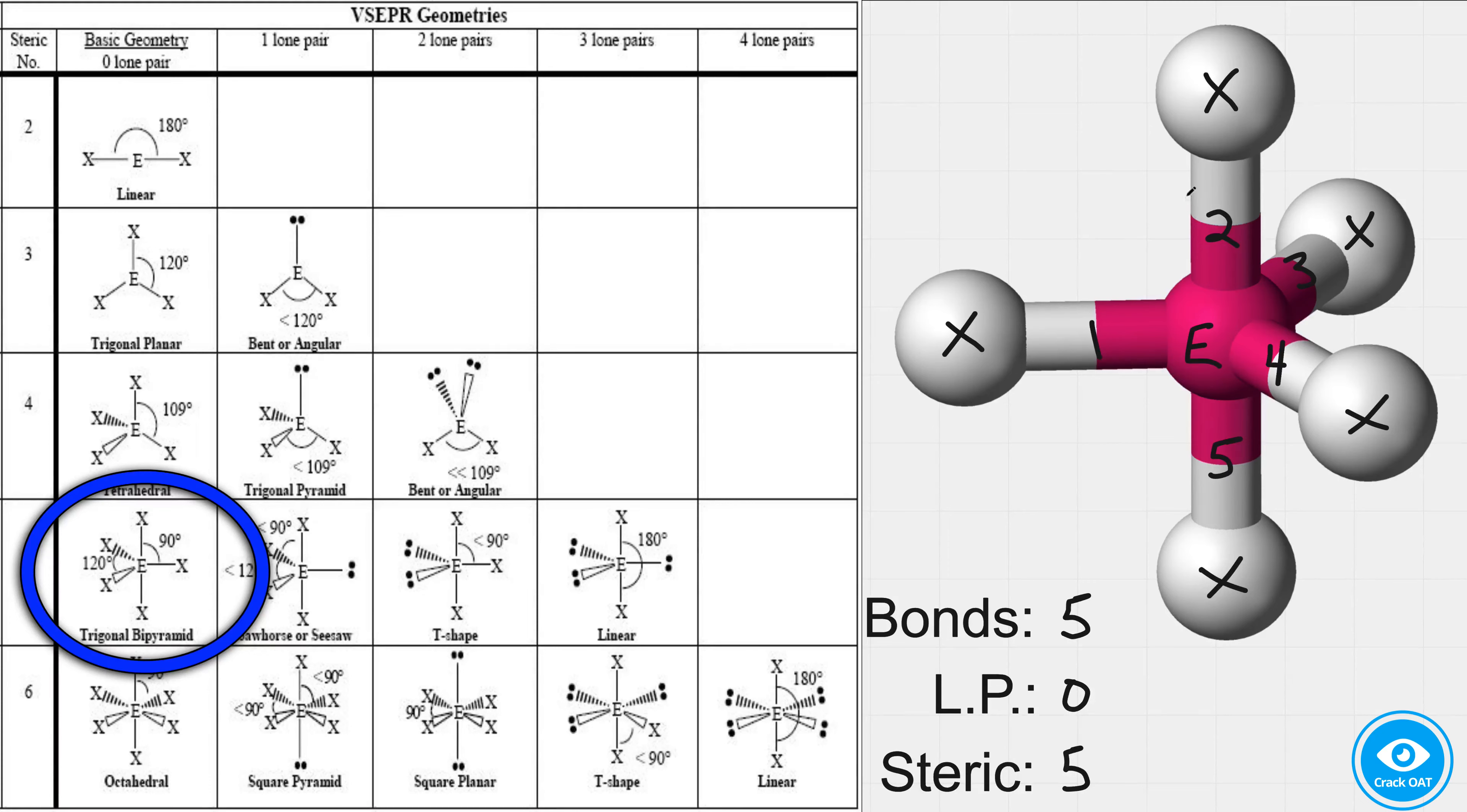So we have two different angles that we need to be aware of here. First of all, from bond number one to bond number two, this is a 90 degree angle.